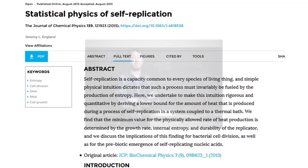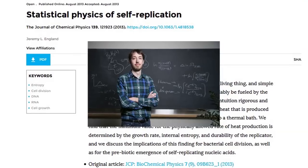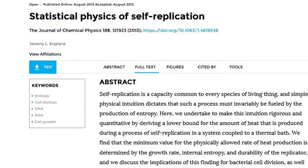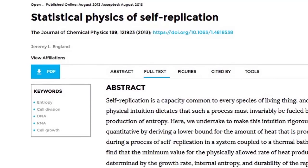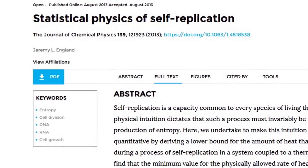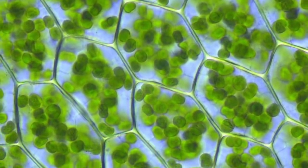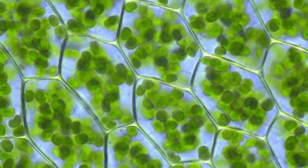In 2013, Jeremy L. England published his own set of theorems in the Journal of Chemical Physics. Taking into account factors such as heat generation, growth rate, internal entropy, and durability of replicators, he was able to present the statistical probability of life emerging from non-life incrementally via chemical means.